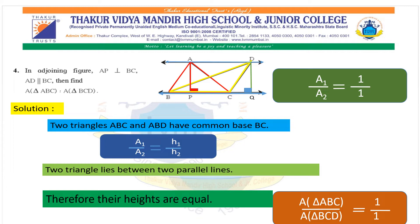When we did Practice Set 1.1, I asked you to remember sum number four, which we will be using in the Basic Proportionality Theorem. You need to remember the property we used: the two triangles have the same base and they lie between two parallel lines.